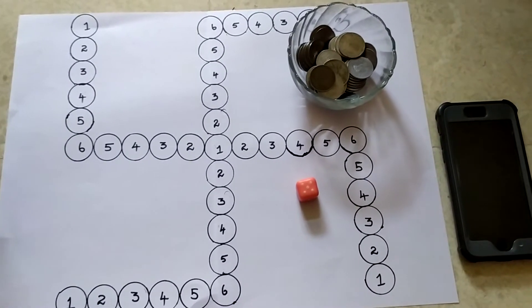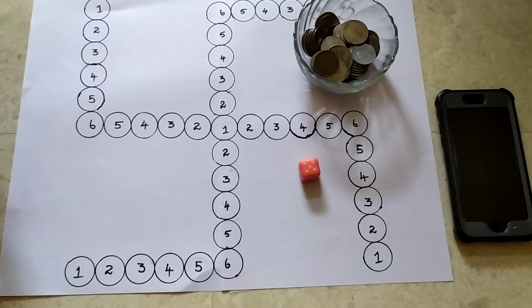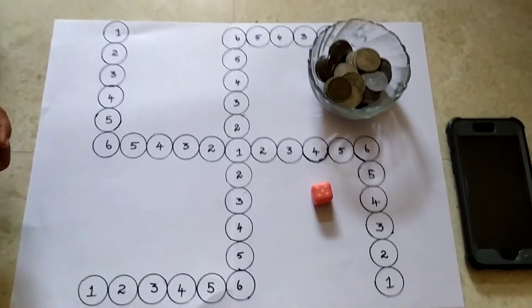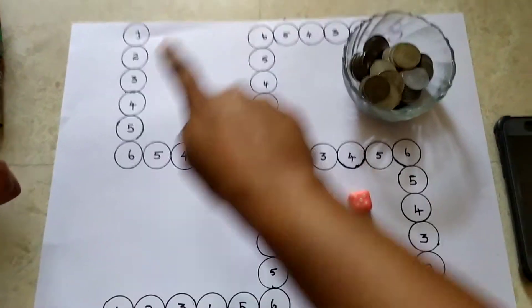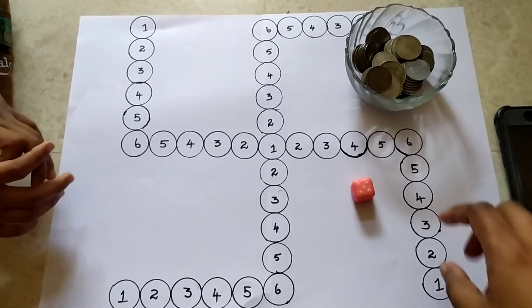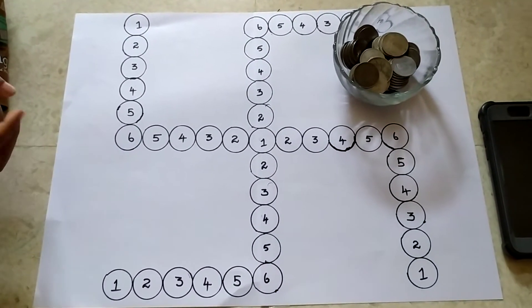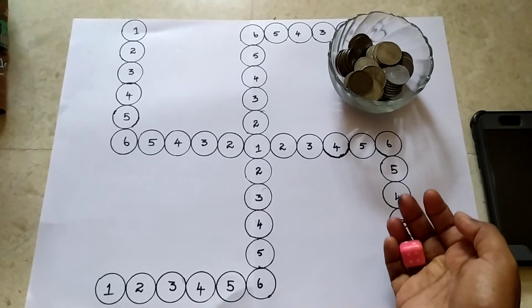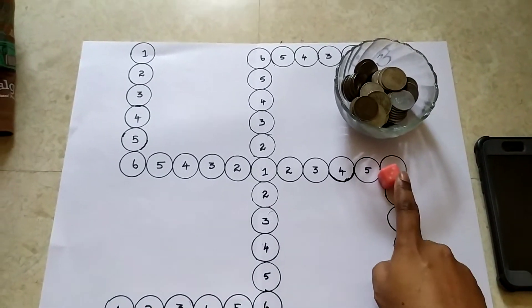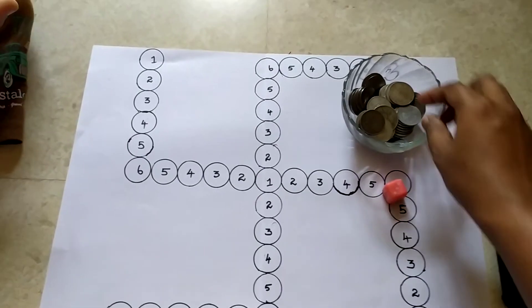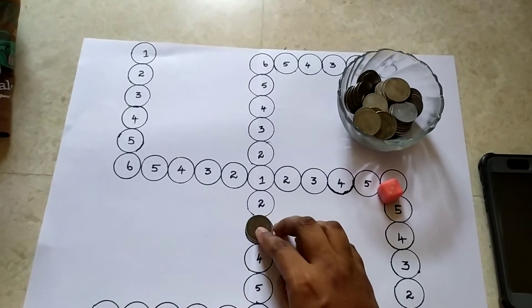Okay, it's similar to that coin game which we played the other day but we've got 1 to 6 written on this paper. So what we're going to do is we'll be switching on the timer for 1 minute and you'll be rolling the dice and the number which falls on the dice you have to place the coin on that number.